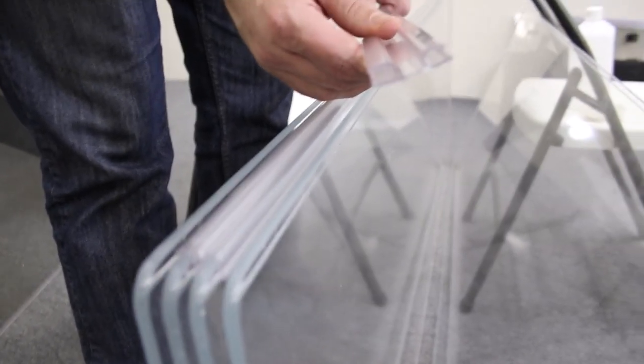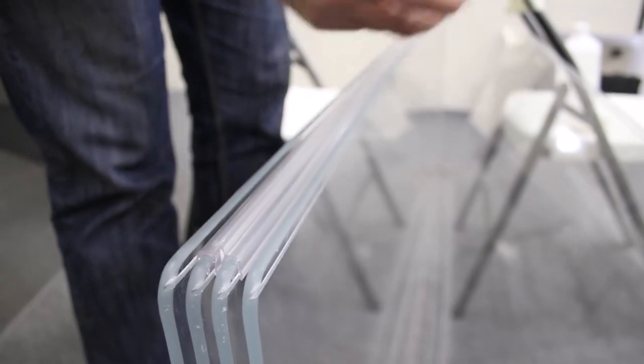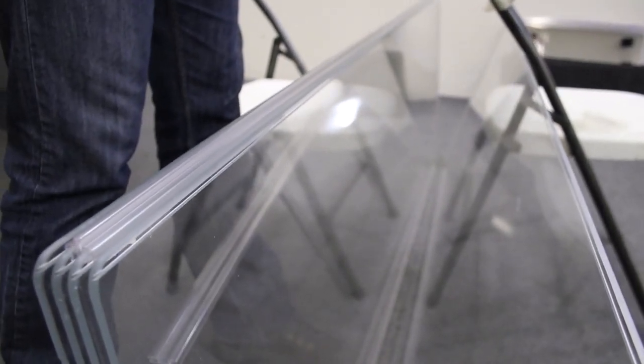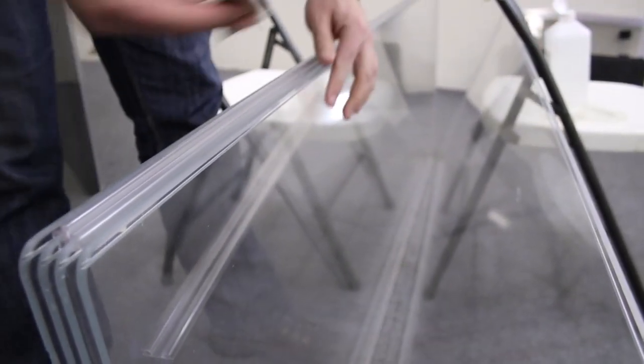On the hinge there's a little tooth that goes into that groove. What you're going to do is use some rubbing alcohol as a lubricant to make the hinge slide on a little easier.